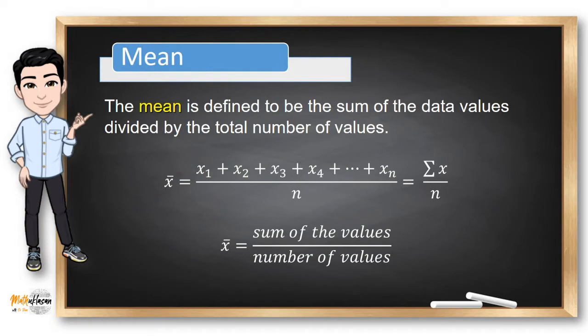The mean is defined to be the sum of the data values divided by the total number of values. A sample mean is represented by x̄. So if you want to compute for the sample mean, all you need to do is to add all the values divided by the number of values that you have, represented by summation of x divided by n.